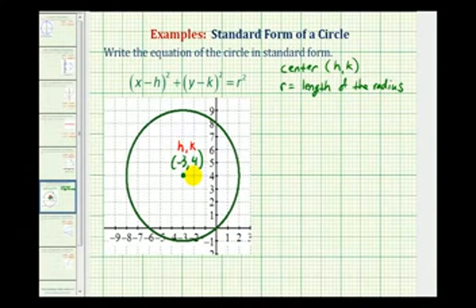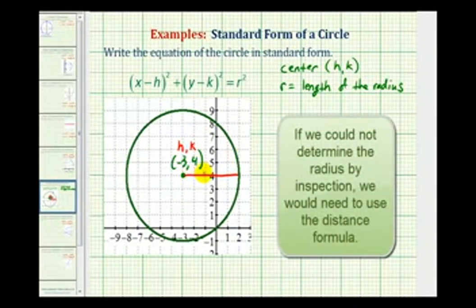Next, the length of the radius is the length from the center to the circle. So the length from here to here would have a length of one, two, three, four, five units. Therefore, r is equal to five.